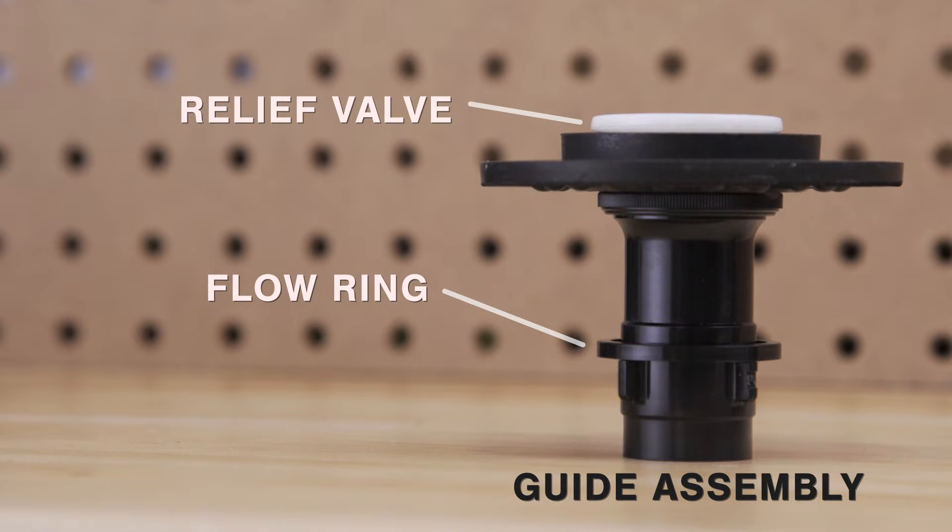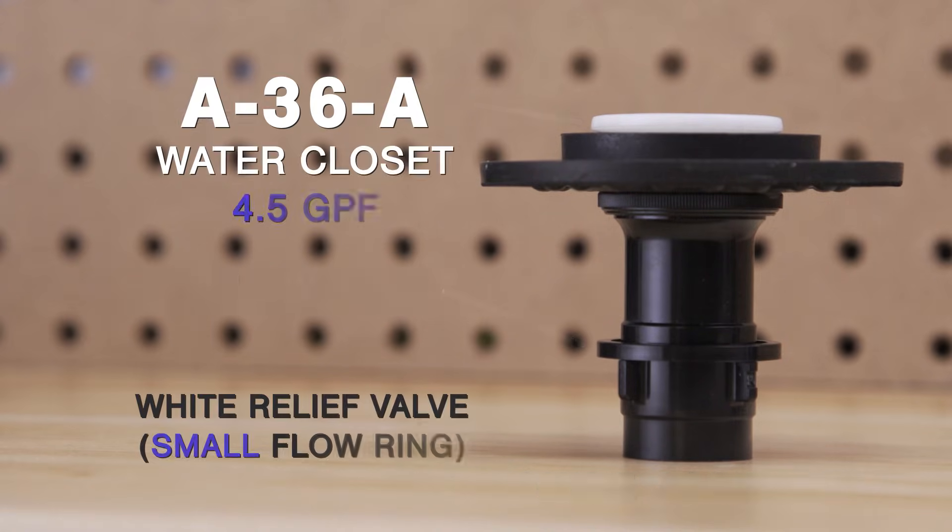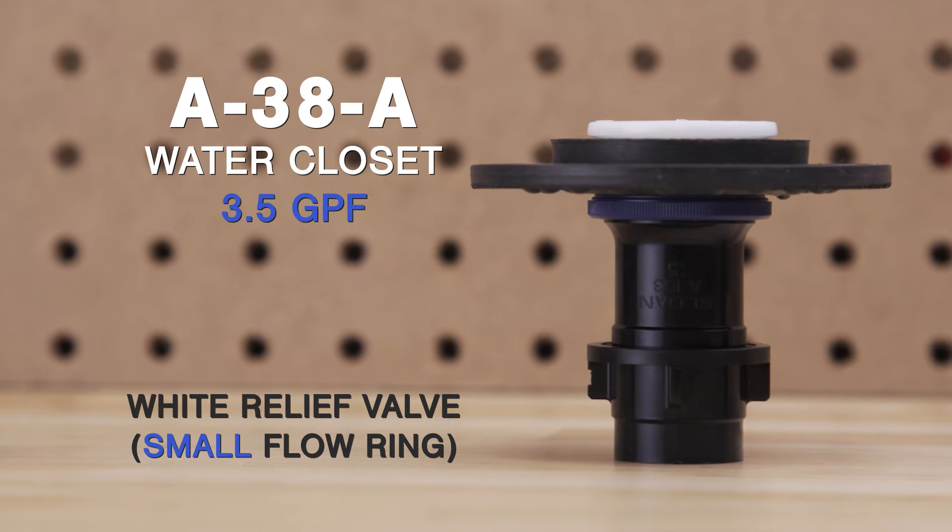The flush volume is controlled by both the guide assembly and relief valve. The relief valve length will change how long the valve stays open. White relief valves create a higher flush volume. Green relief valves create a lower flush volume and are most commonly found in water-saving units.